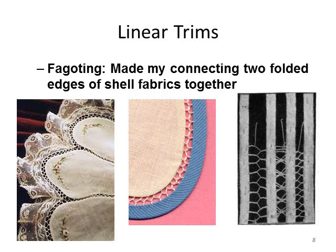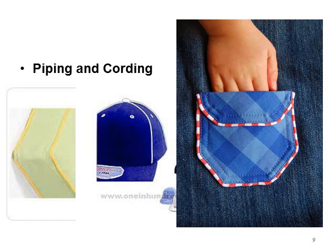Fagoting is made by connecting two separate edges together with an interwoven crisscross braid pattern. In this example, you have the shell piece, the decorative piece, and in between is the fagoting technique — you can use different color threads, but it's mainly the crisscross pattern used to connect two edges. Here are also a couple of variations of the fagoting technique.